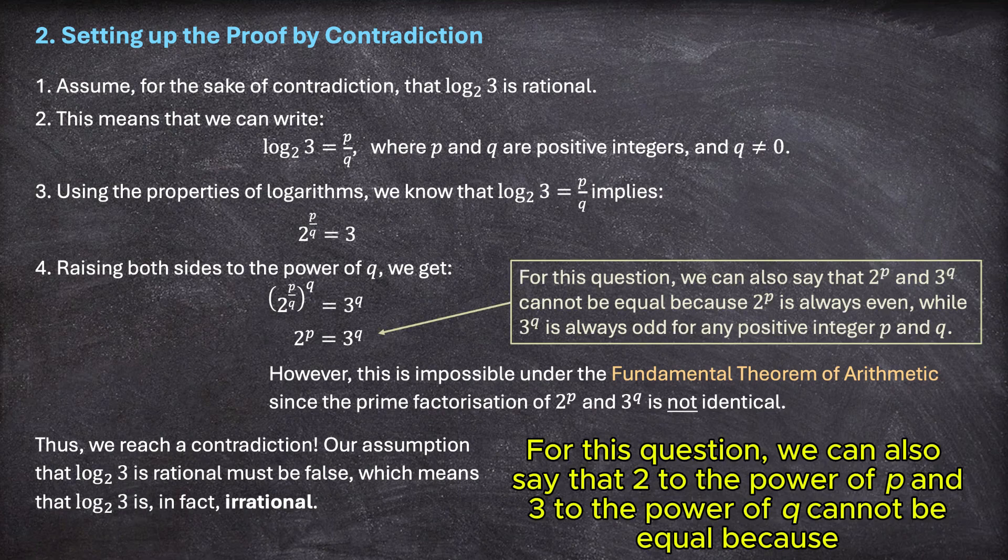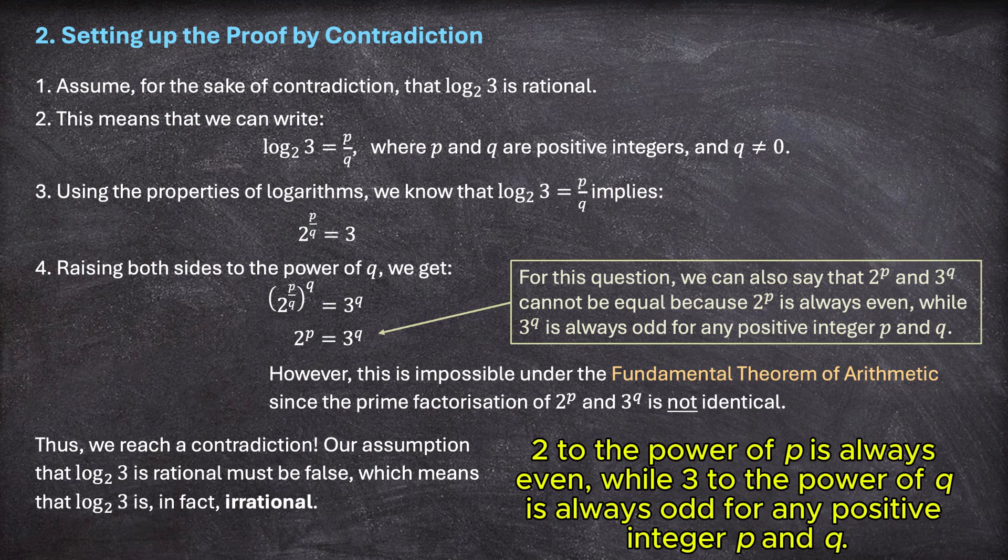For this question, we can also say that 2 to the power of p and 3 to the power of q cannot be equal because 2 to the power of p is always even, while 3 to the power of q is always odd for any positive integer p and q.